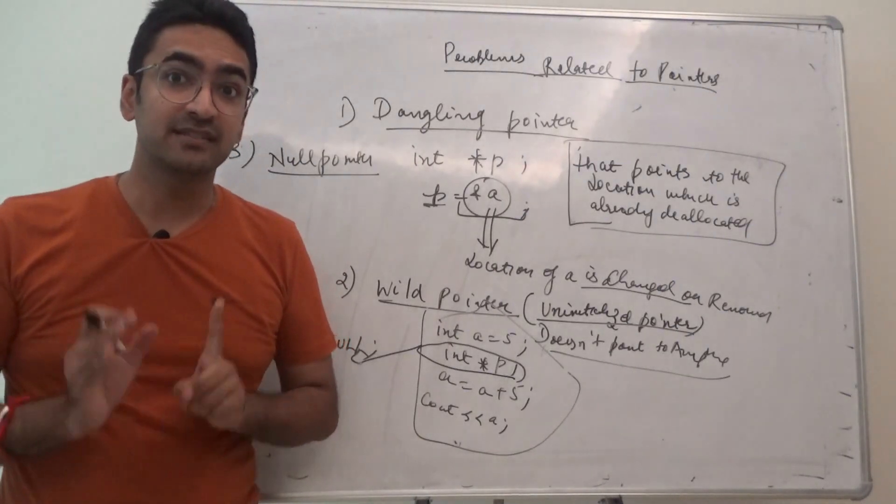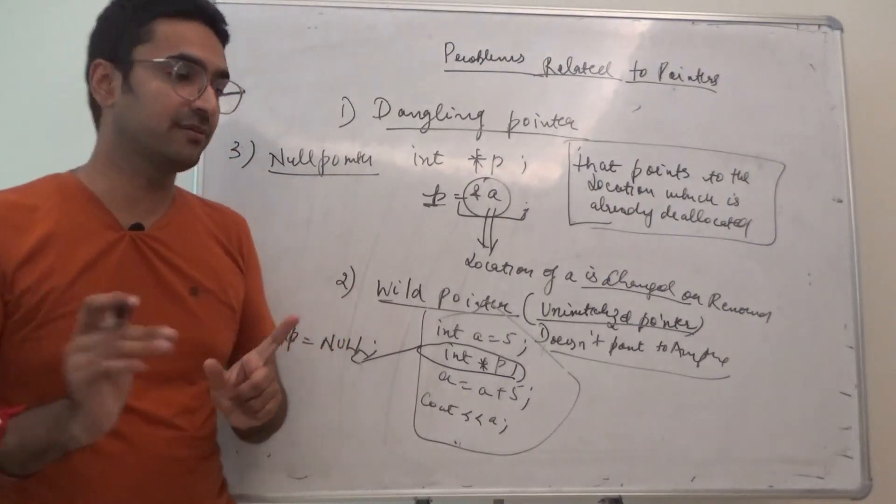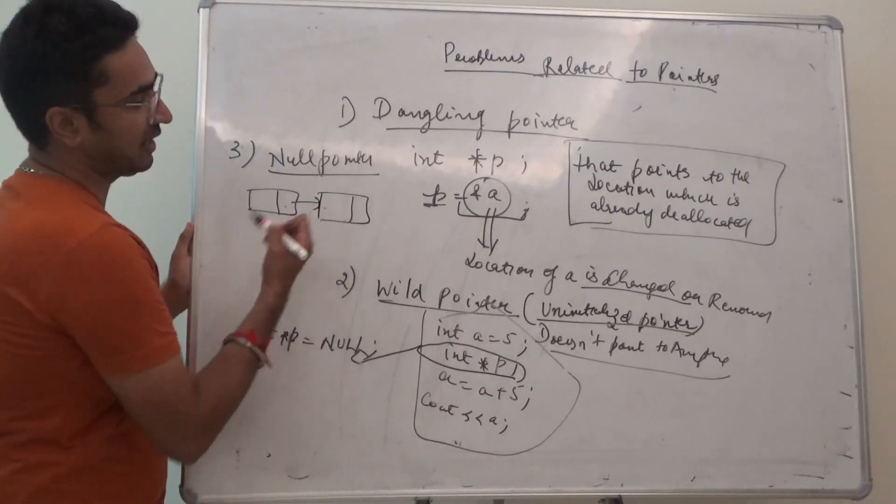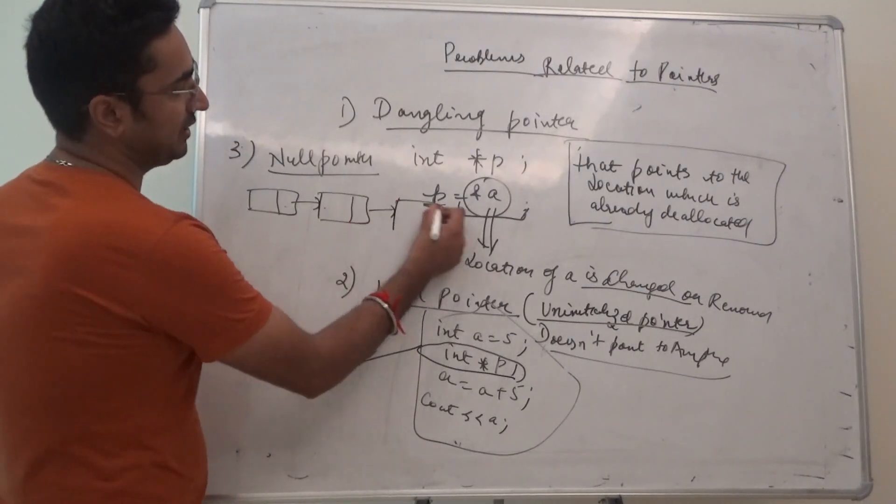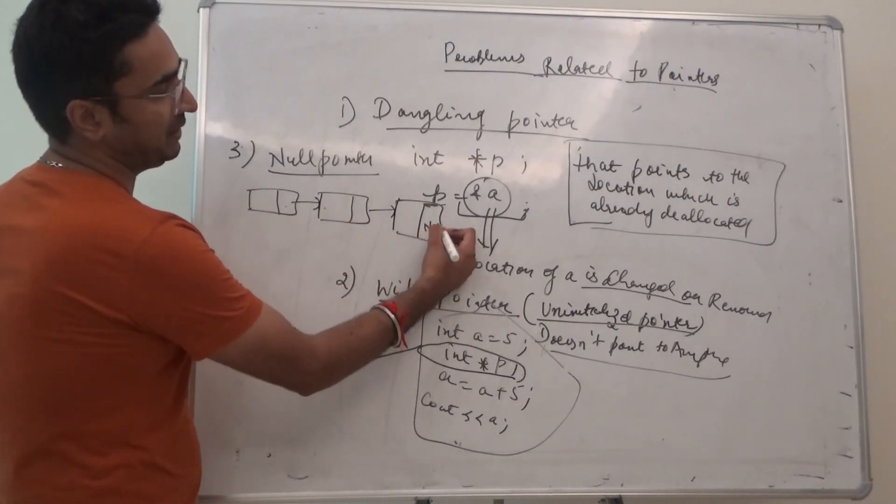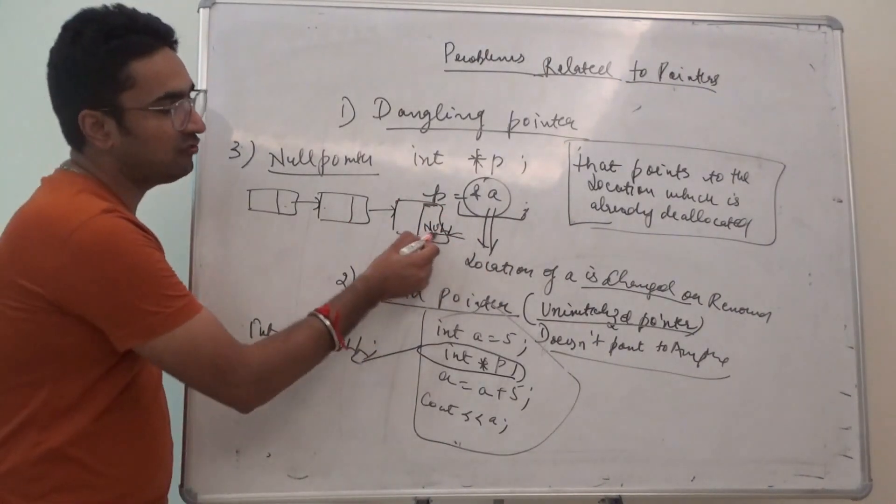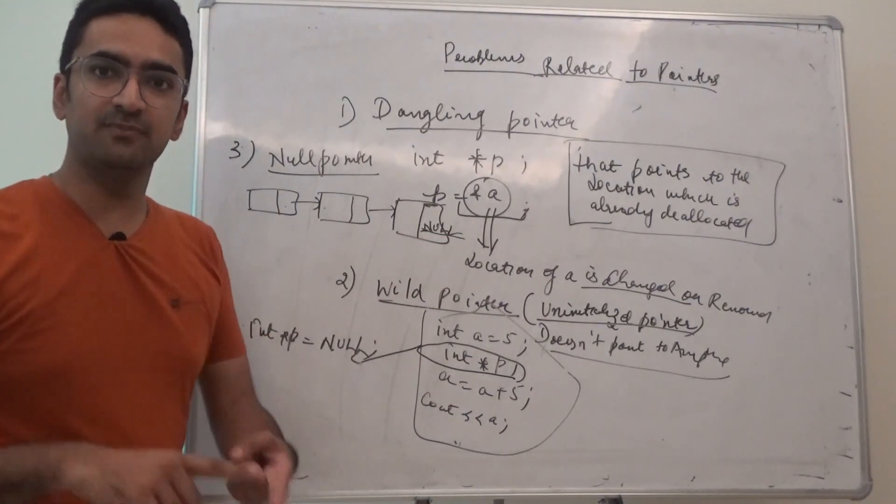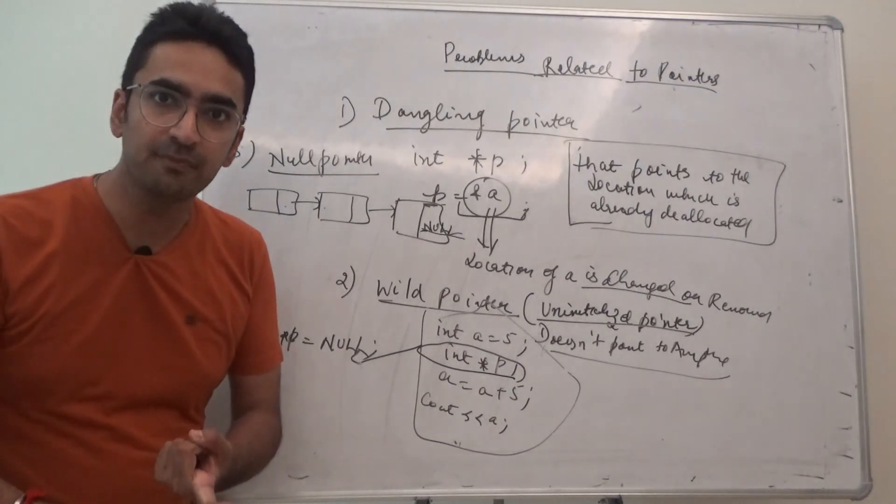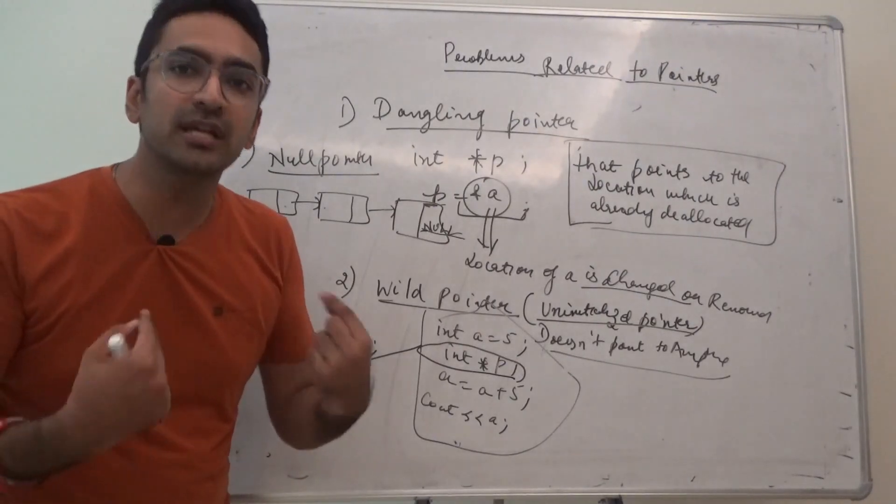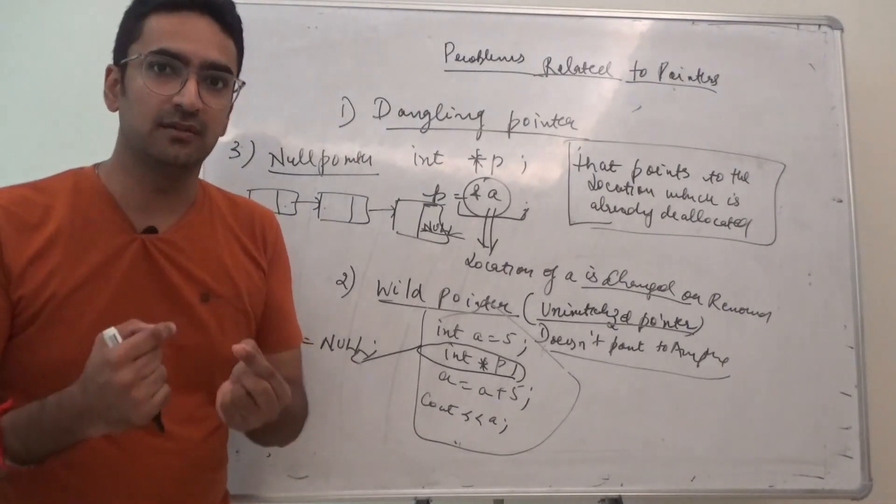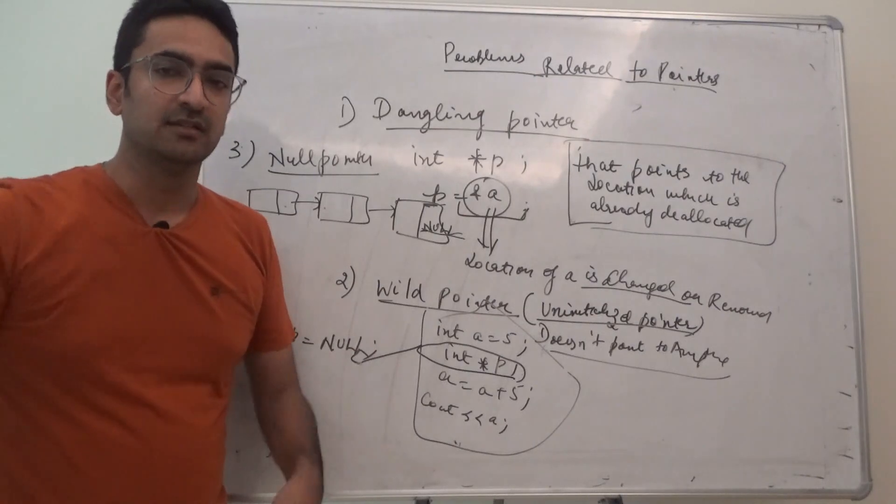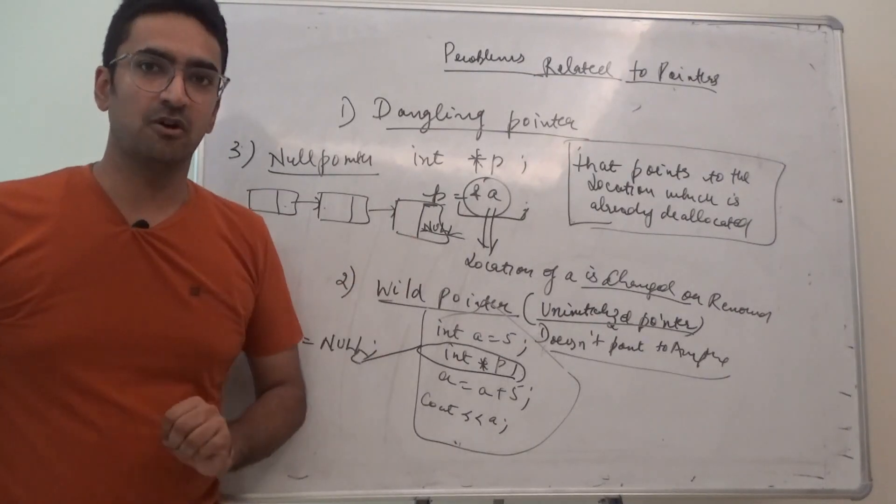It's used in linked lists. As the last location address, if you remember, a pointer of first points to the value of second, and the last one - if I want to complete it entirely, I always assign that with null pointer. Null pointer means rather than pointing to a location which is deallocated or not pointing to any location, assign the value with null so that it does not point to anything. That is the significance of null pointer.